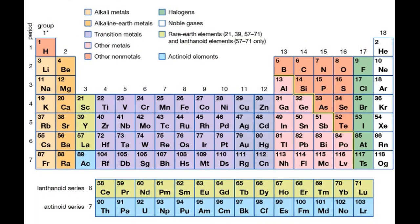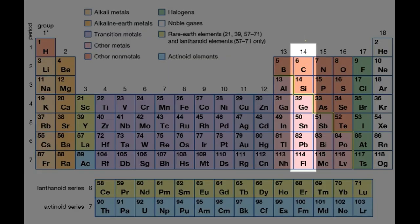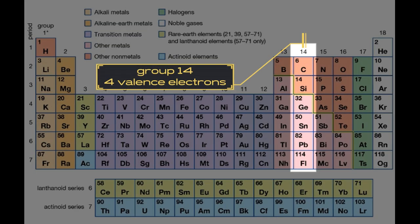So why carbon and silicon? Well they're both in group 14. So they have four valence electrons, four electrons in the outer shell.